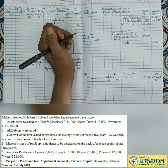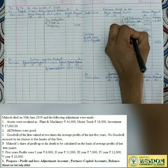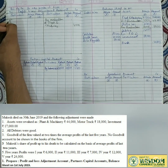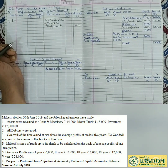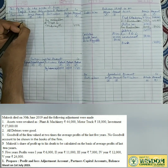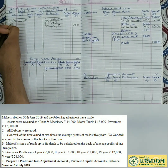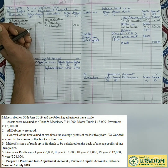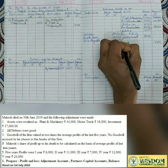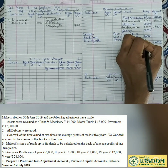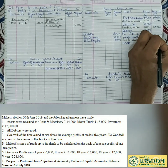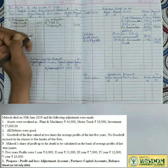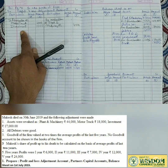Motor truck value decreased - less revaluation 2,000 rupees; from the original, it becomes 18,000. We write 'To revaluation account - motor truck - 2,000 rupees' on the debit side. Investment value also decreased: less revaluation 1,000 rupees, so investment becomes 17,000. Asset decreased is bad news, so it goes on the debit side - 'To revaluation - investment - 1,000 rupees'. Adjustment number 1 complete.